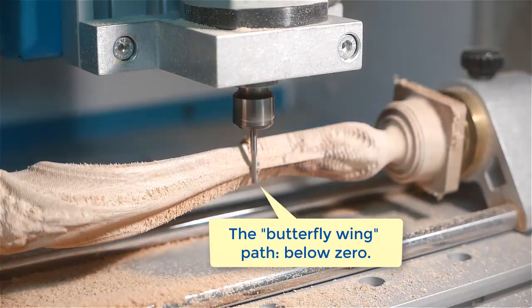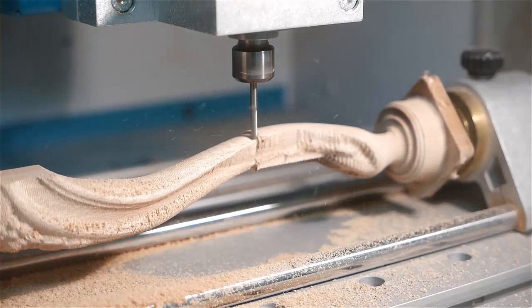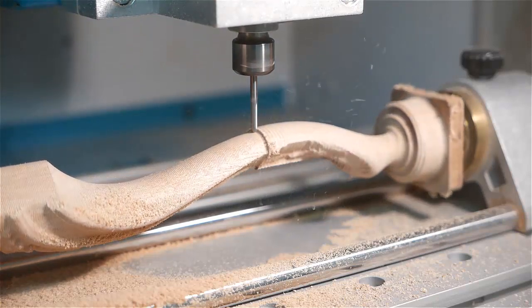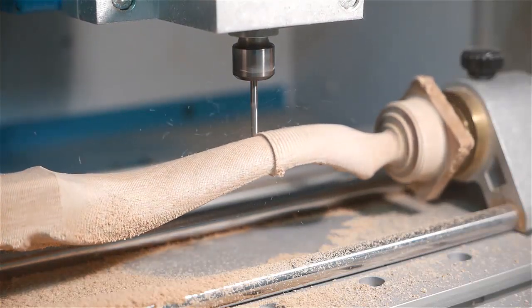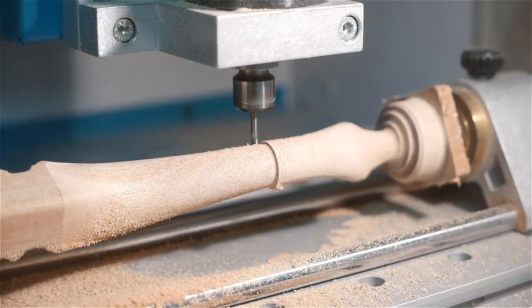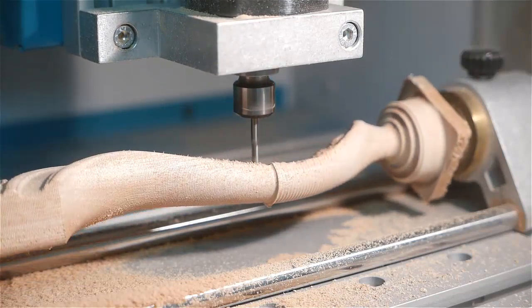For rotary machining with toolpaths that go below zero, the workpiece zero point of the machine needs to be very accurately set with the tip of the cutter exactly on the rotation axis line. Reason is that now, in each rotation, two spots will be machined twice.